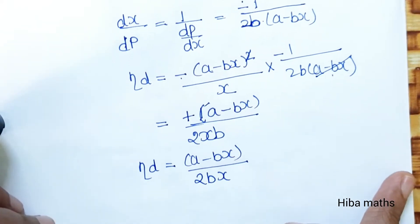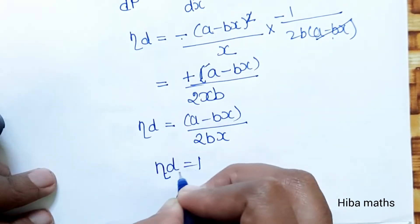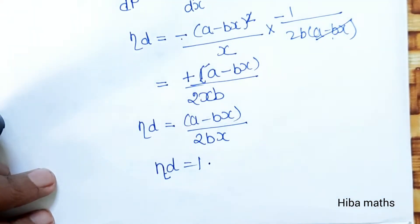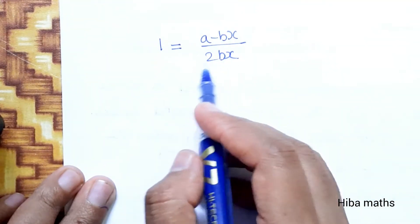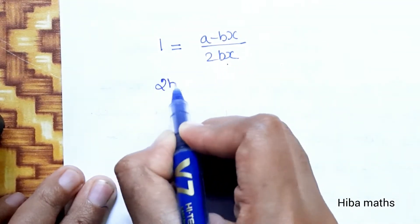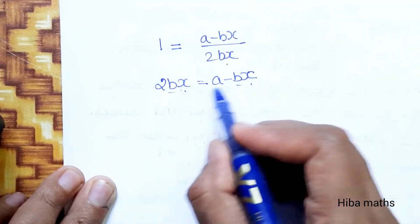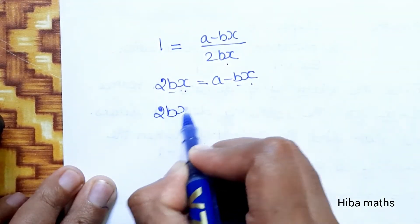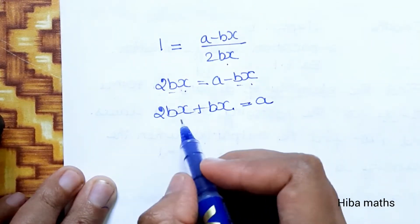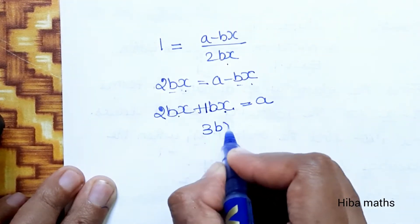Now we find the output when the elasticity of demand is equal to unity. We substitute eta_d equals 1 and solve for x. That gives 1 equals (a minus bx) divided by 2bx. Cross multiplying: 2bx equals a minus bx. Bringing bx to the left side: 2bx plus bx equals a, so 3bx equals a.